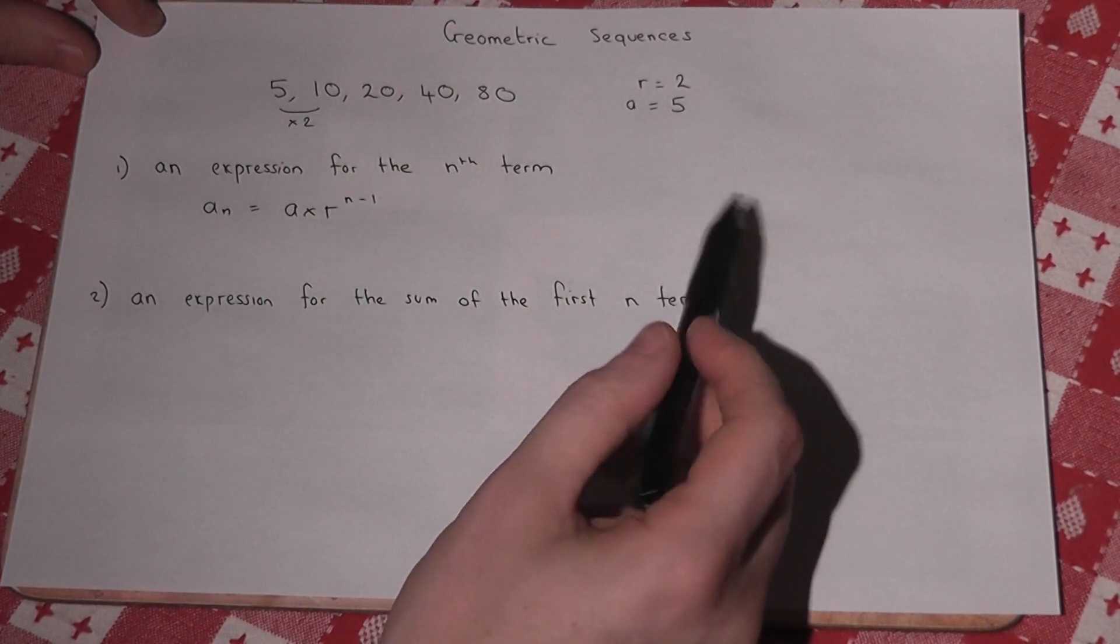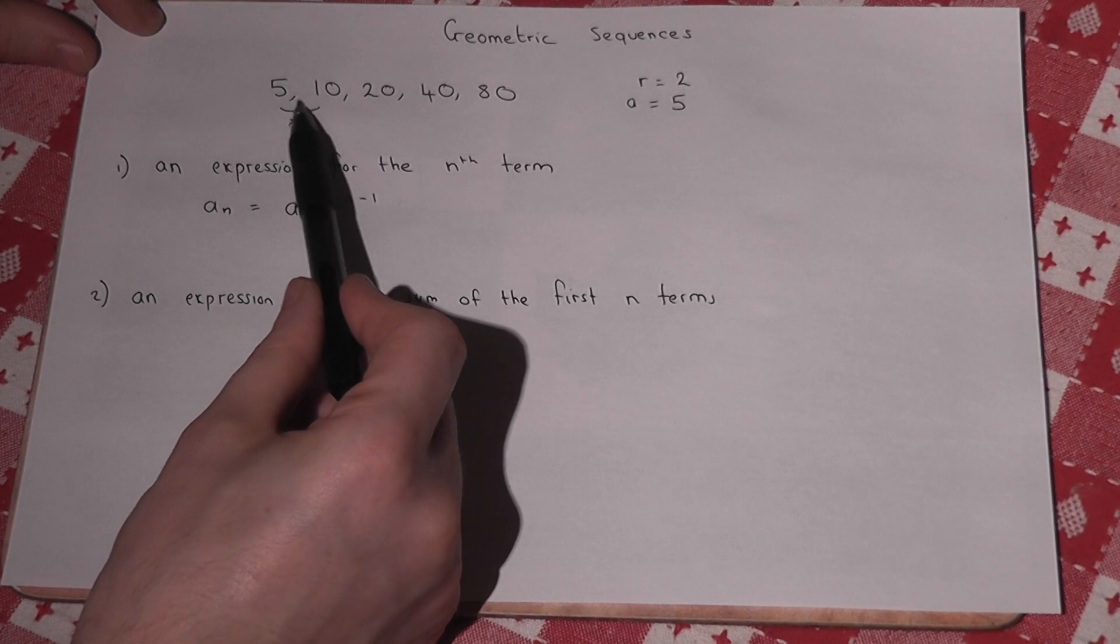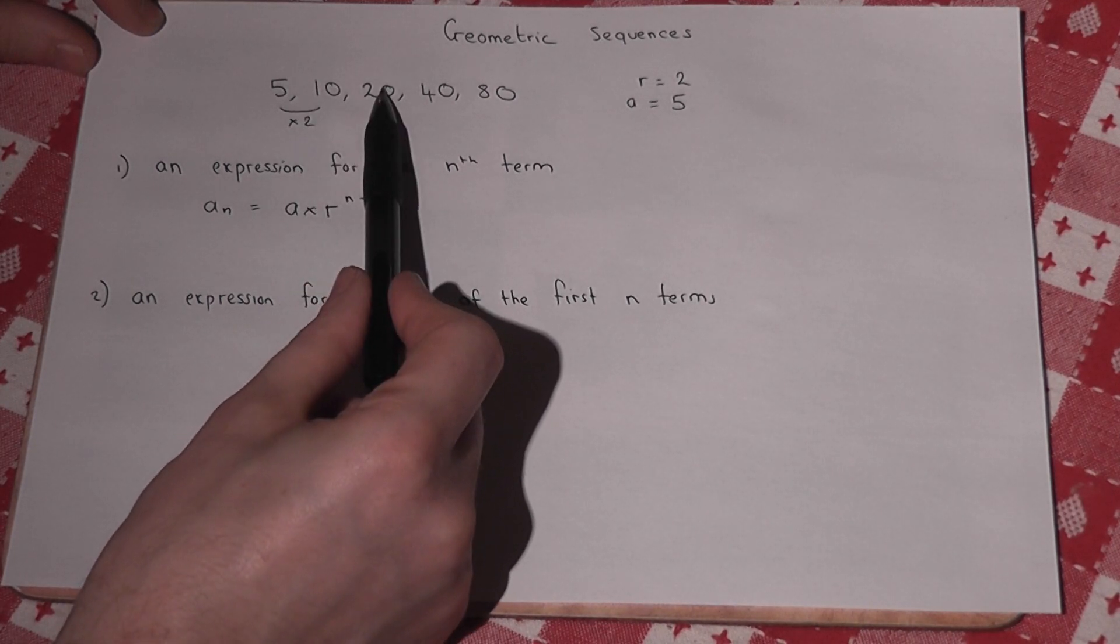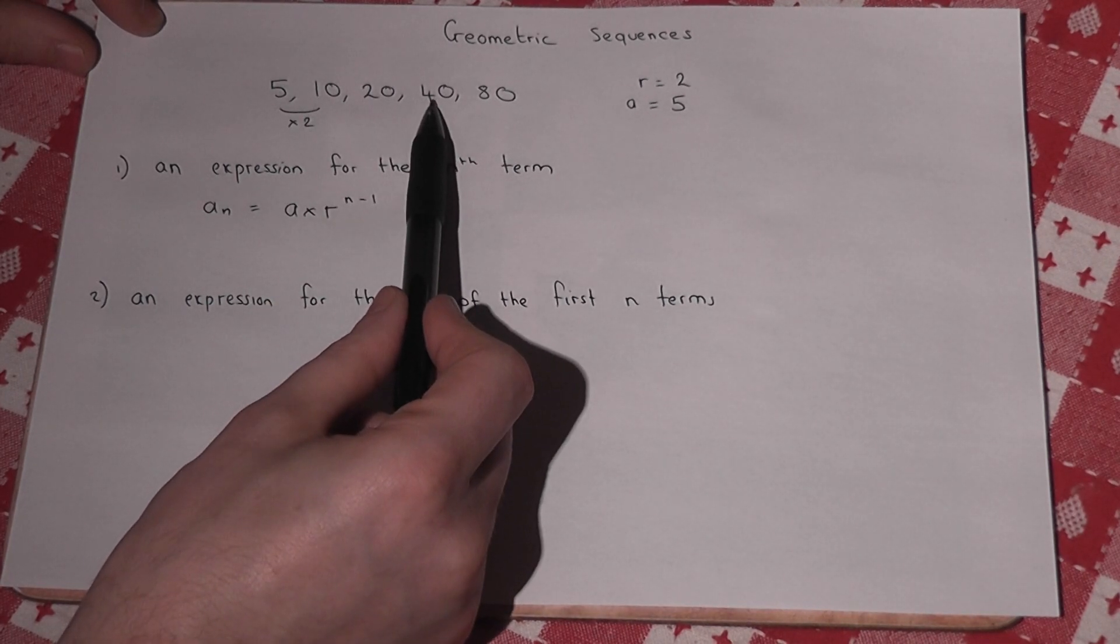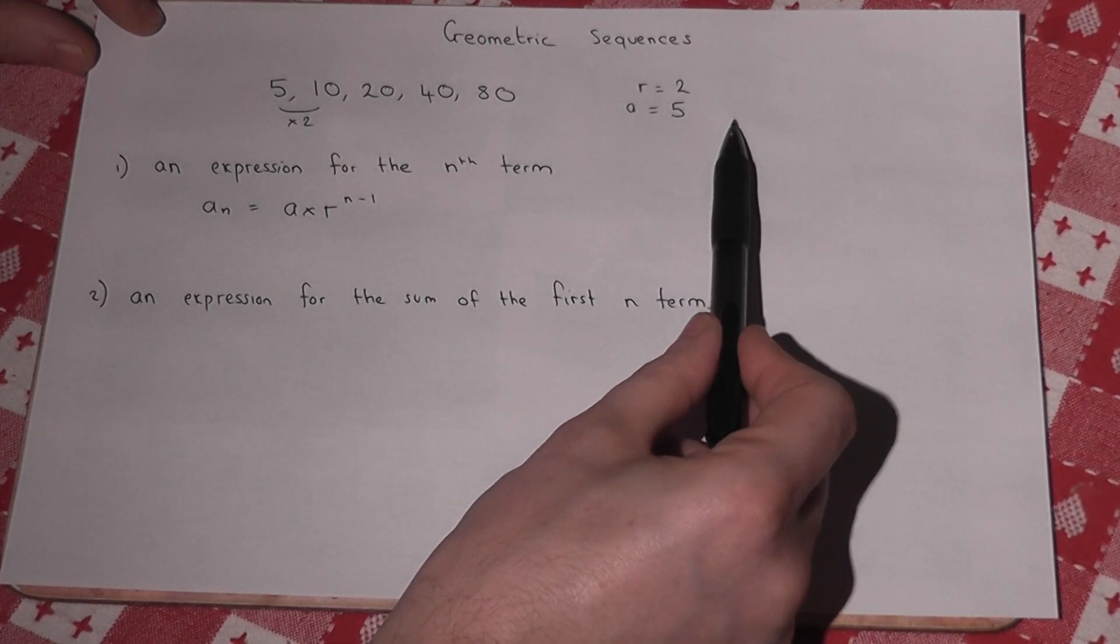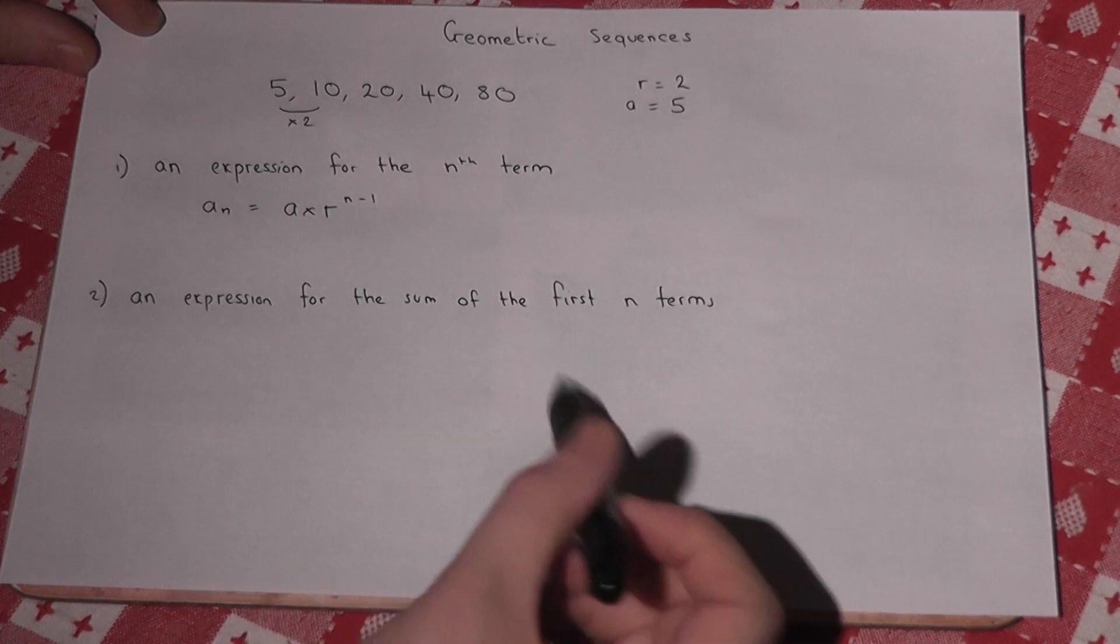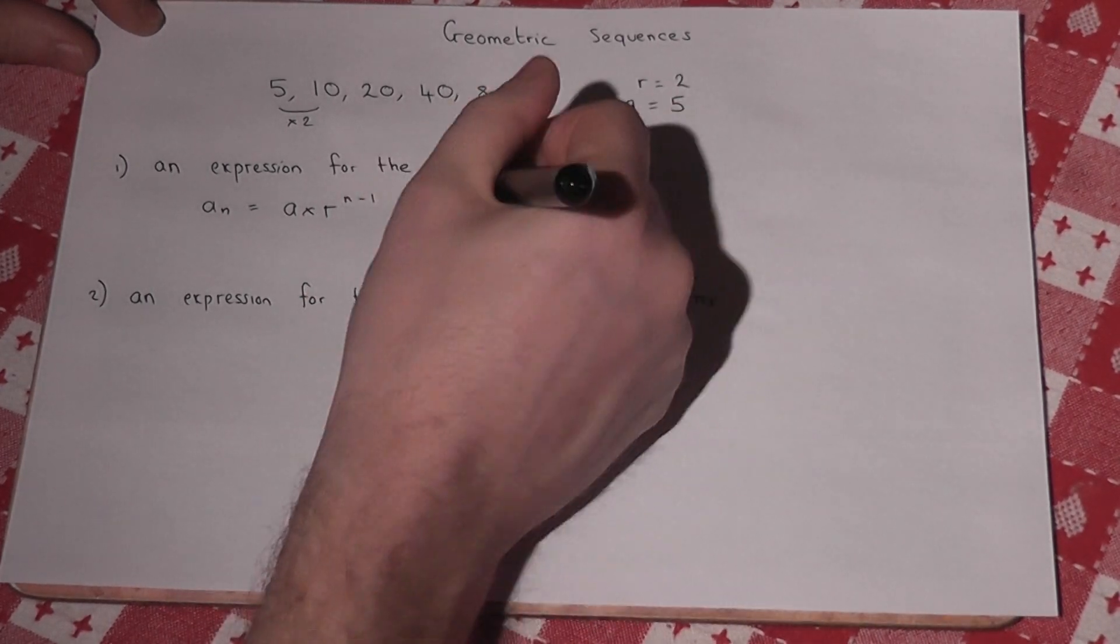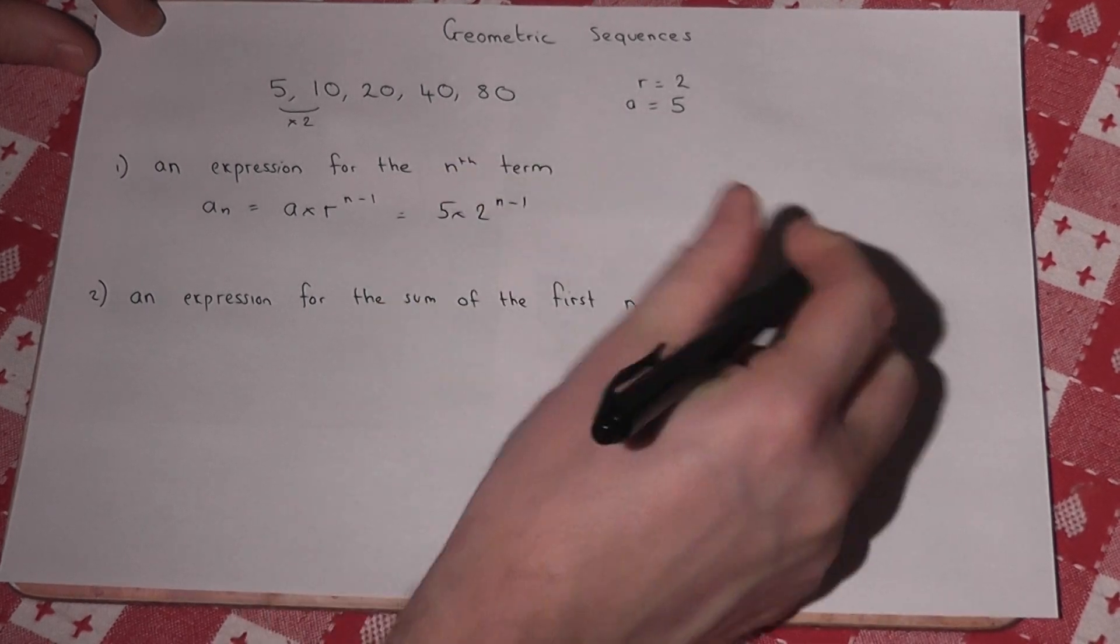Now the reason for this is the first term is a, the second term is a times 2, the third term is a times 2 squared, the fourth term is a times 2 cubed. So the nth term will be a times the ratio to the power of n minus 1. So in this case a is 5 times by 2 to the power of n minus 1.